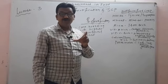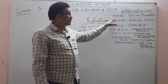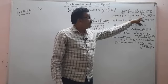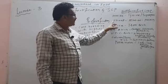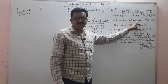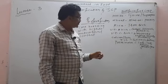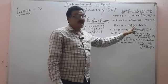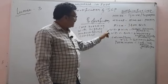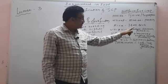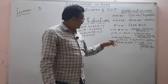Bio-fortification means crop plants are made in which lysine and tryptophan amino acid content increases. Wheat: a variety containing high concentration of proteins. Rice: iron-rich variety. Vitamin A-rich crop plants are carrot, spinach, and pumpkin.